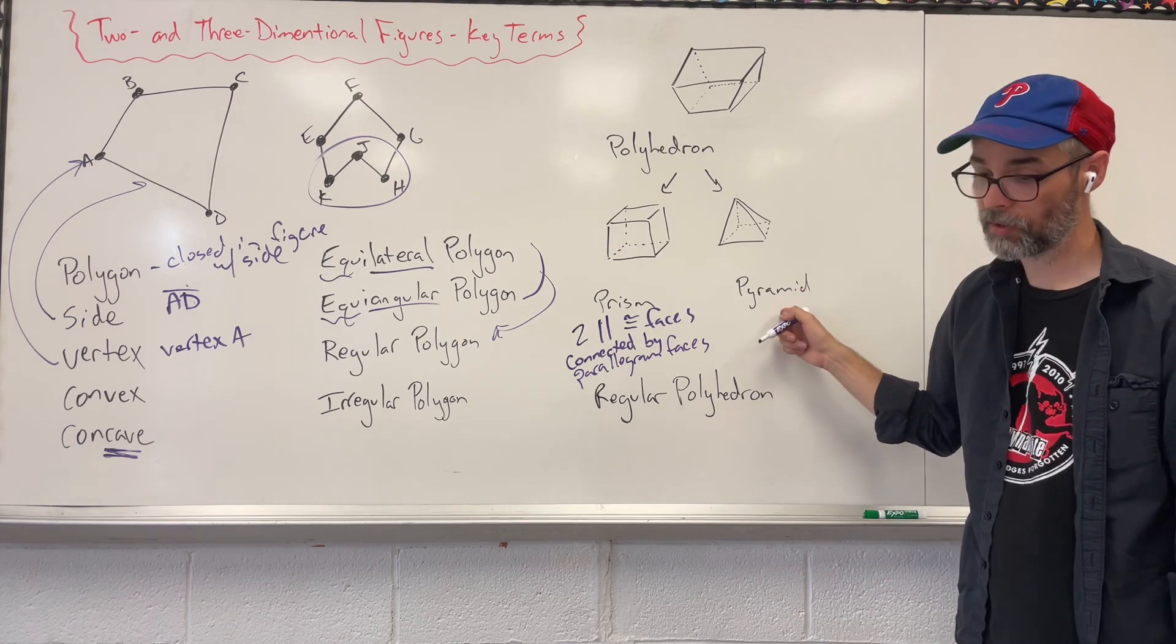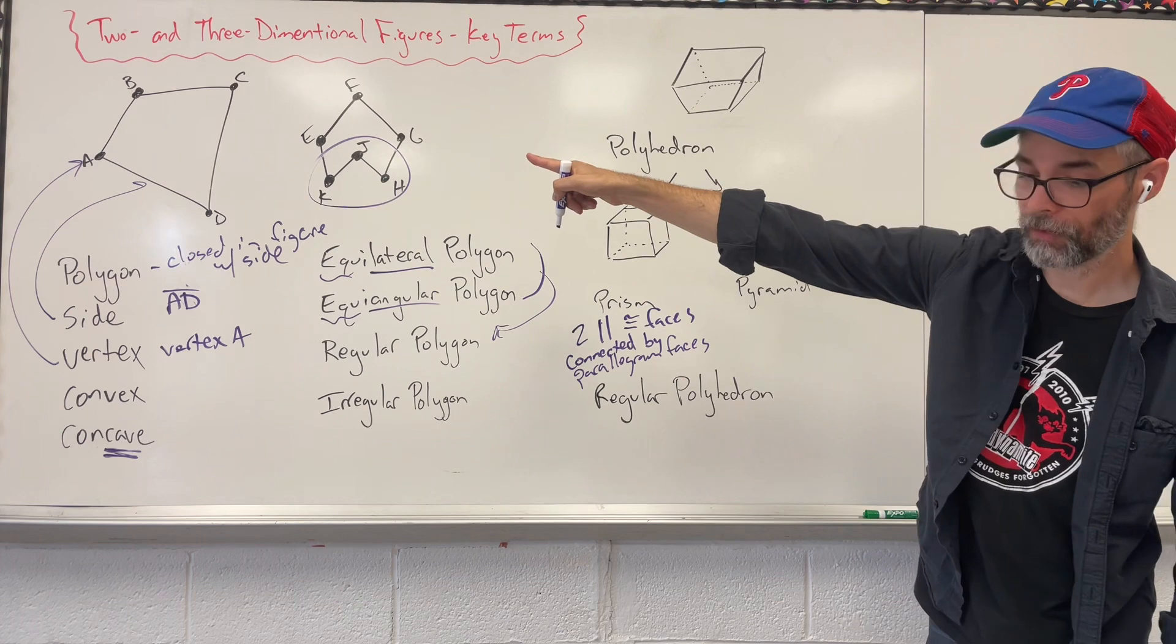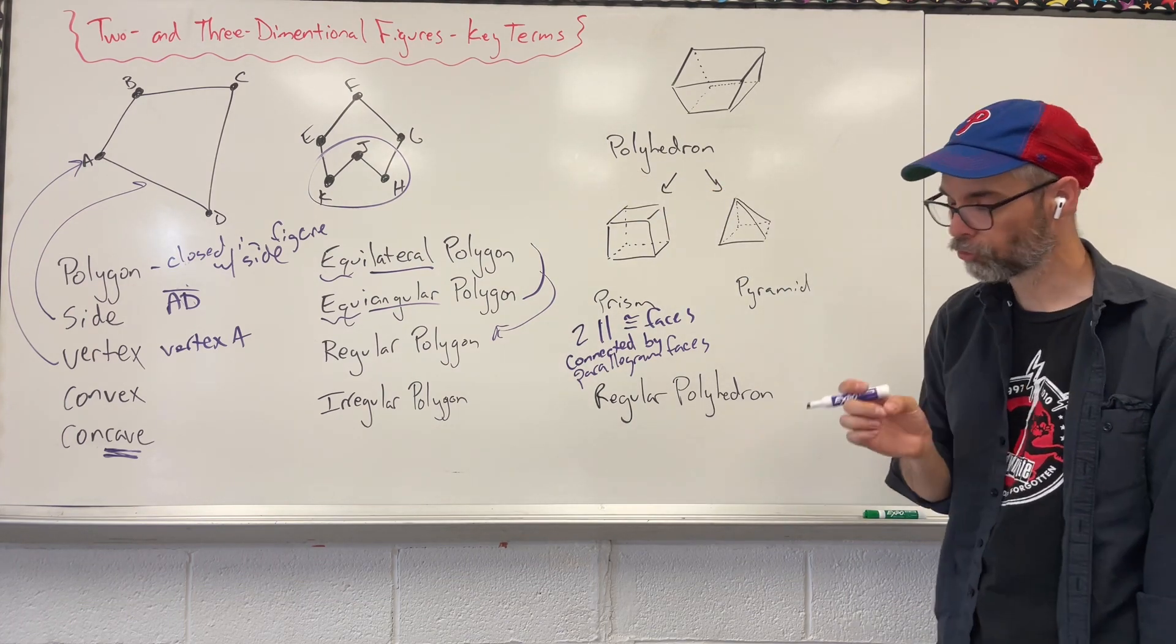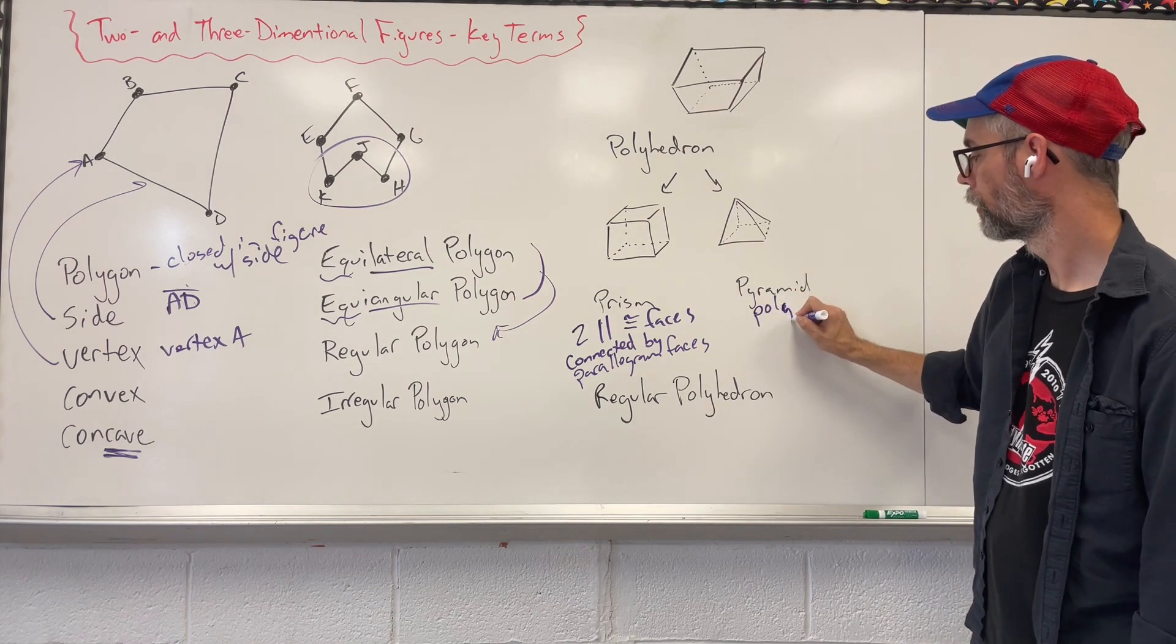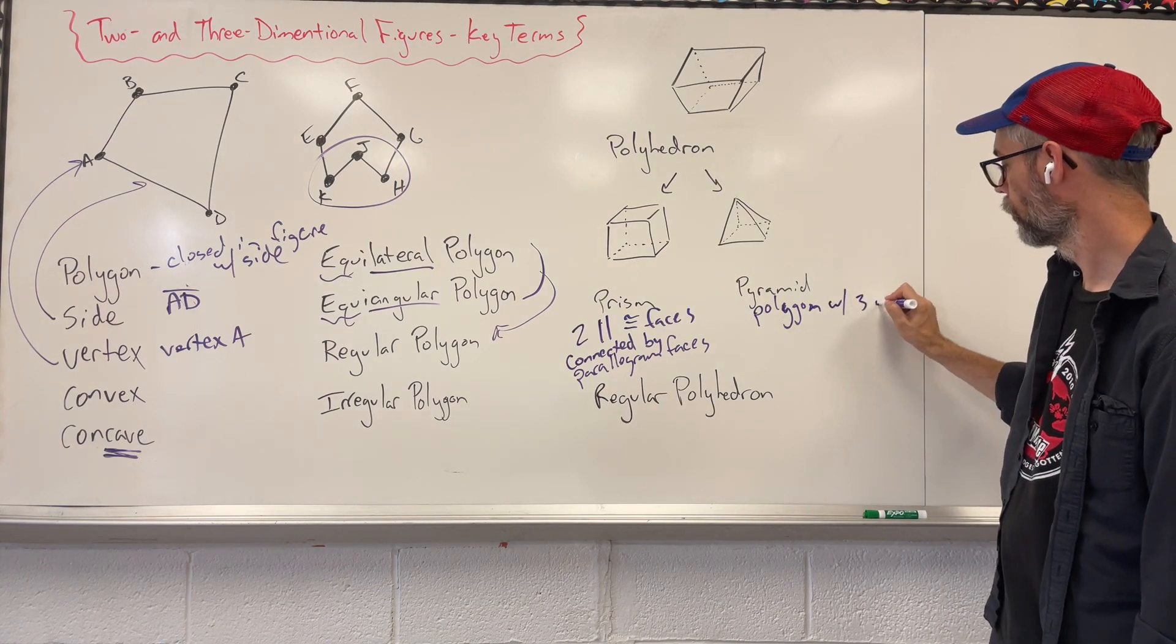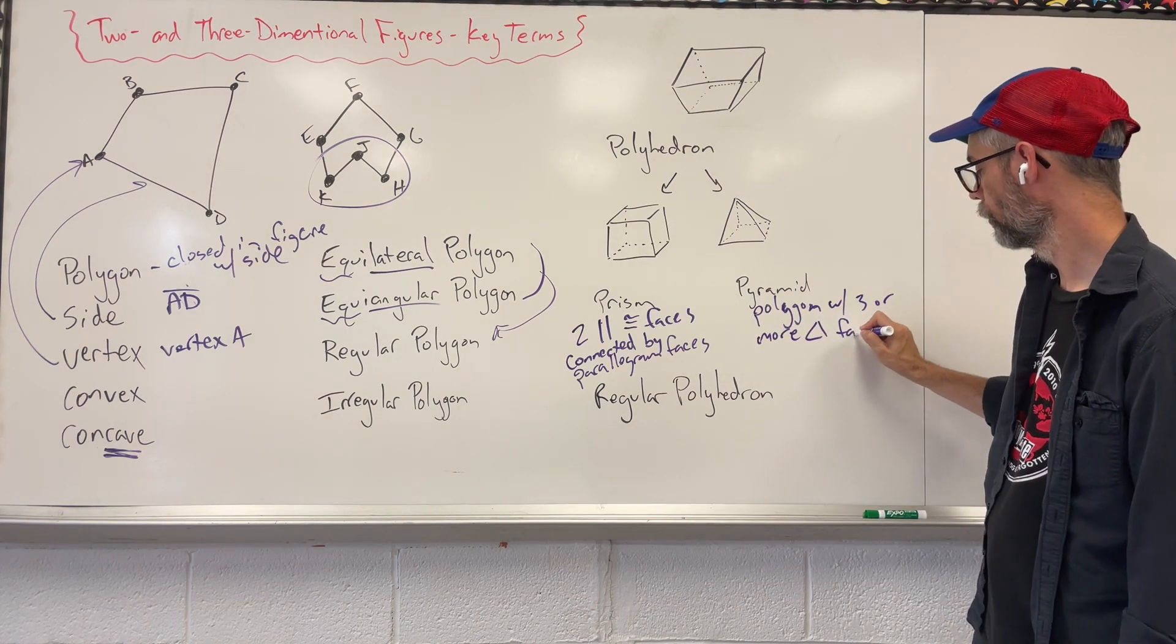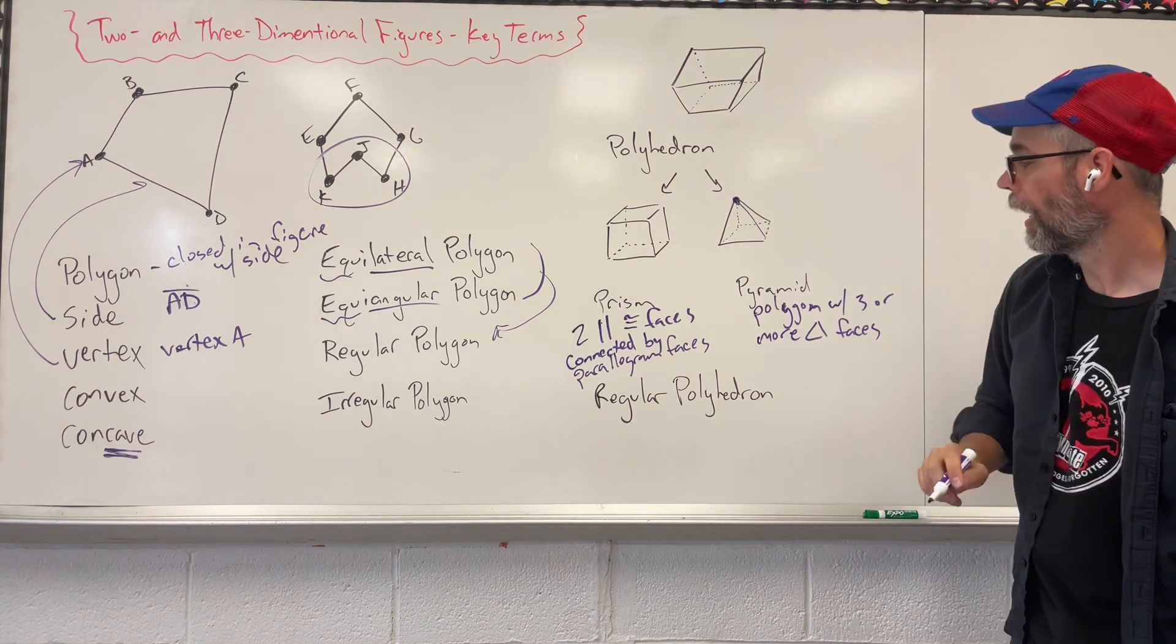A pyramid, though, this one's a little different. We have a polygon, like what we have over there, of three or more, and it has three or more triangle faces. So we have a polygon with three or more triangle faces, and they all meet at a single vertex.